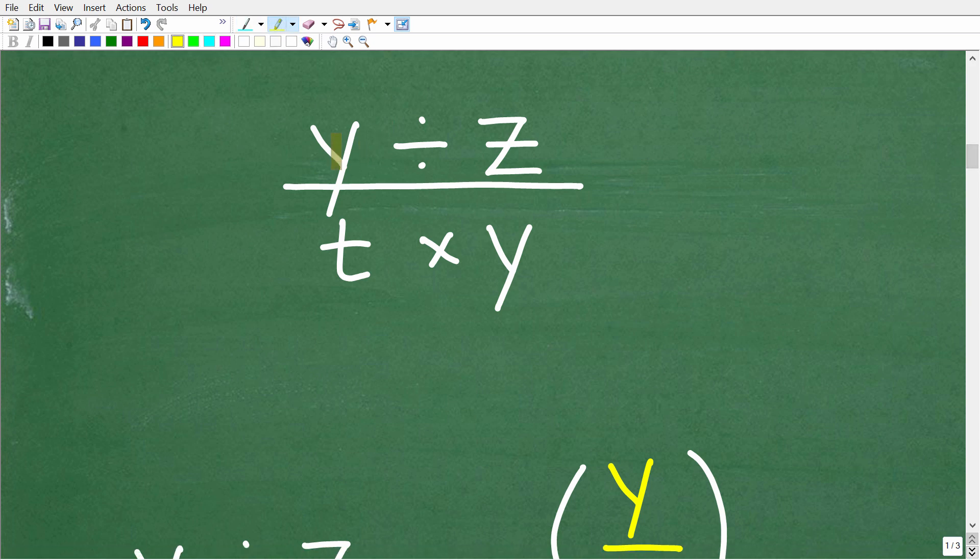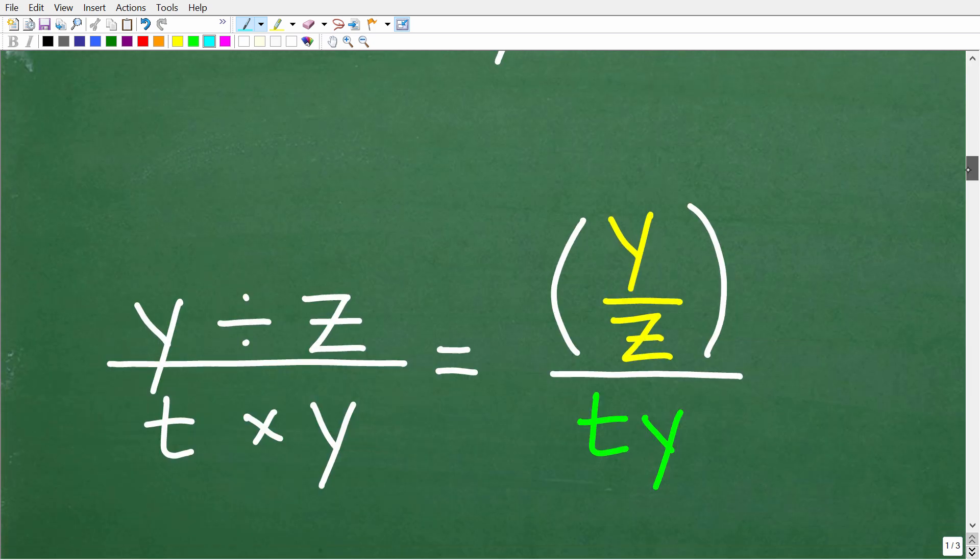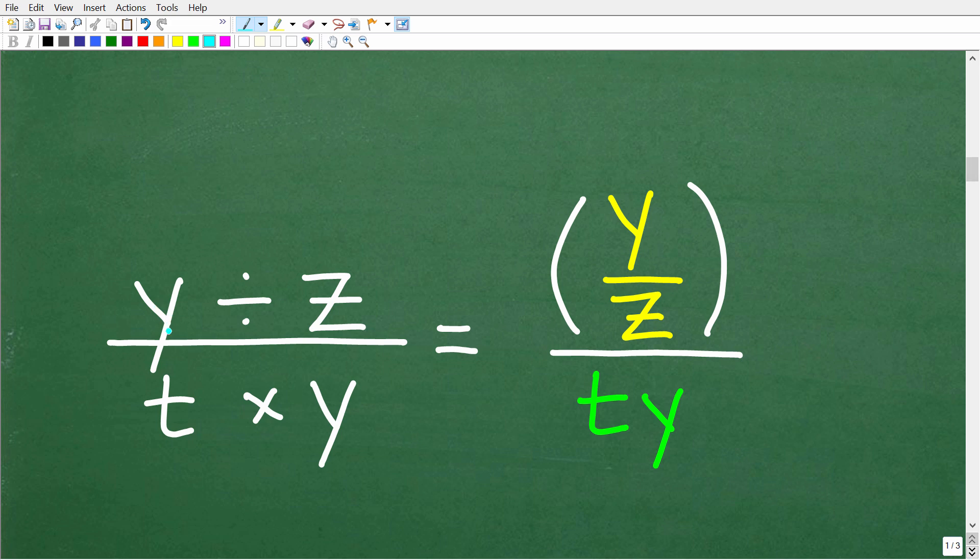And we want to express this numerator differently. We have y divided by z. So we have this division operator right here. So let's express this as a complex fraction. So that's going to look like this. So instead of y divided by z, we want to write it this way.